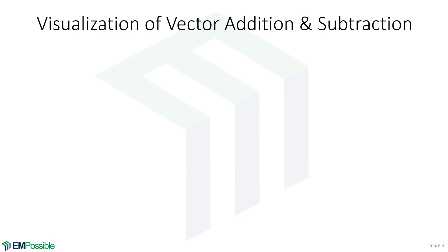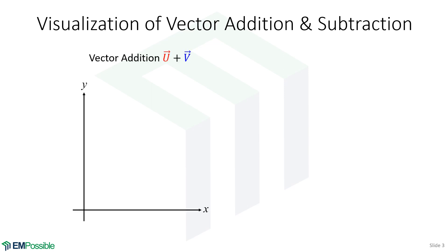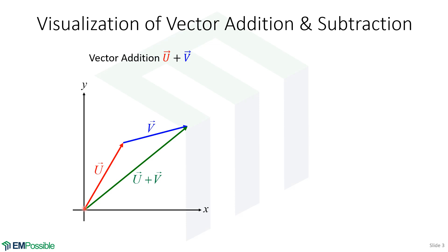Let's visualize vector addition and subtraction. To add two vectors u and v, we start by drawing vector u, then draw vector v extending from the tip of u in the direction of v. The vector sum is then the vector that connects the start of vector u to the end of vector v after we've stacked v onto u. The green line here is the vector sum or vector addition.